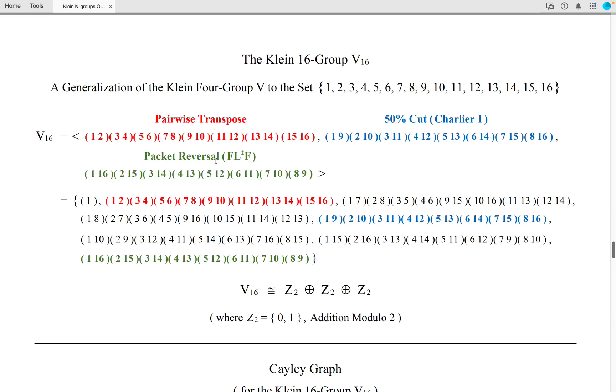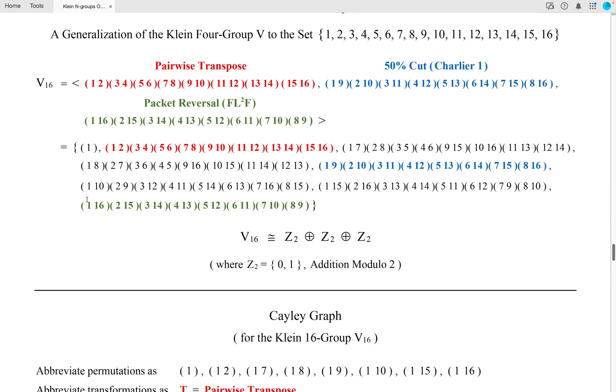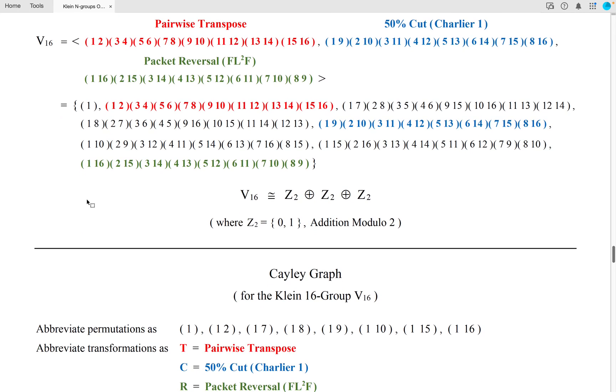And these three shuffle permutations generate the entire Klein 16 group, which has an order of 8. And here are all of the elements of the Klein 16 group. And it is isomorphic to the direct sum of Z2 with Z2 with Z2.